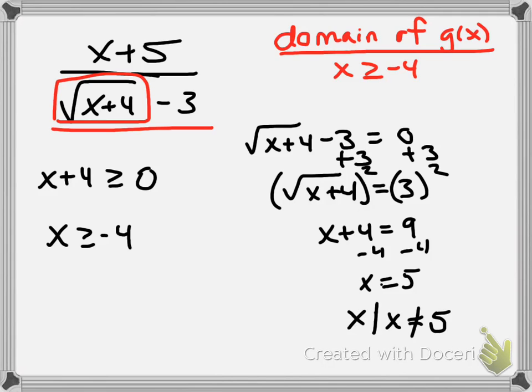And lastly, what we need to do is combine all these. We want to combine all these individual parts into one overall domain. So let's list them out here. We have x is greater than or equal to negative 4, and we have x cannot be 5.